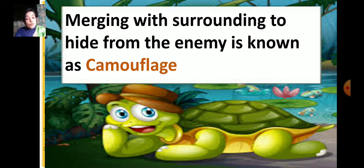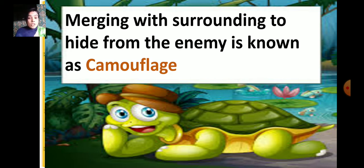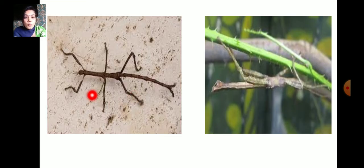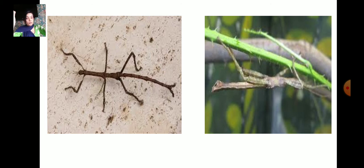Camouflage means merging with the surroundings to hide from enemies. For example, the tiger has a skin color that matches its surroundings. When it walks in the tall grasses, we cannot identify that the tiger is there because its skin color matches the surrounding. There is also the stick insect — this insect looks almost like a twig.